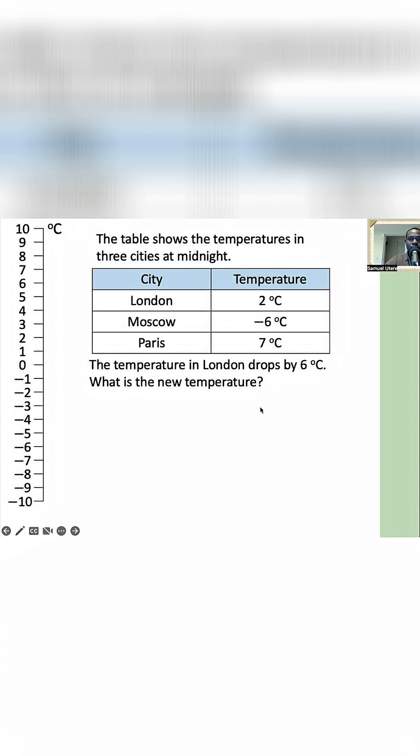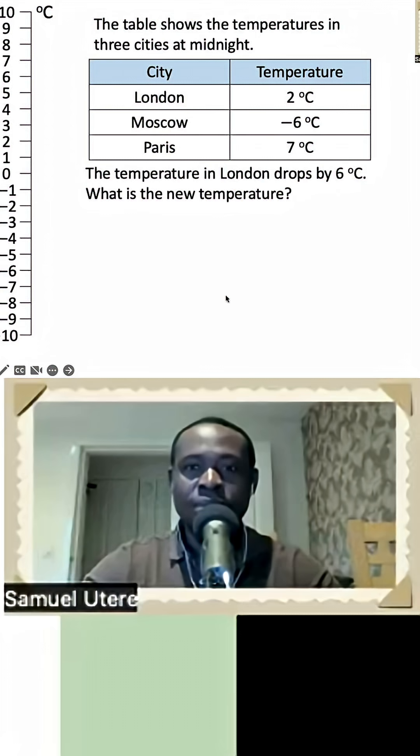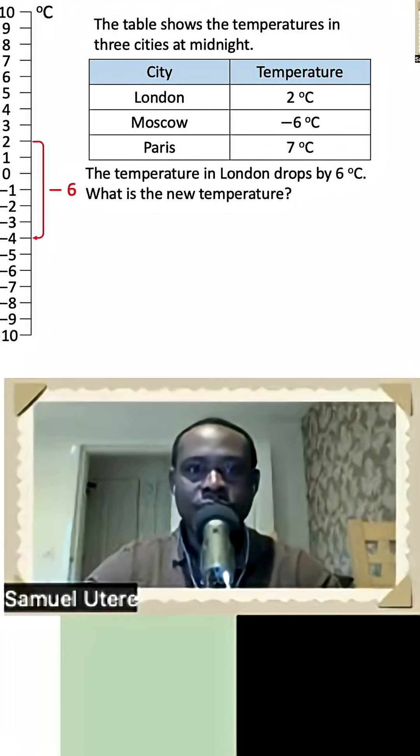Words like drop or less will tell you that you're subtracting or counting to the left. Or if you have a temperature scale like this, you're counting down. So from 2 degrees in London, if we count 6 steps down, that will take us to negative 4.